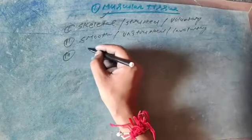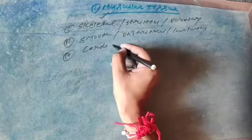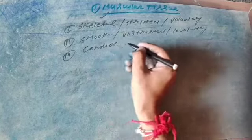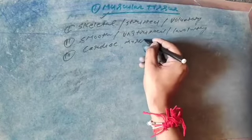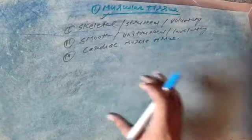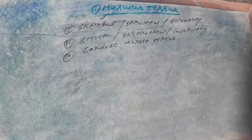The third one is cardiac muscular tissue. That is very important to know. Cardiac muscular tissue is actually associated with our cardiac system, meaning our heart system.